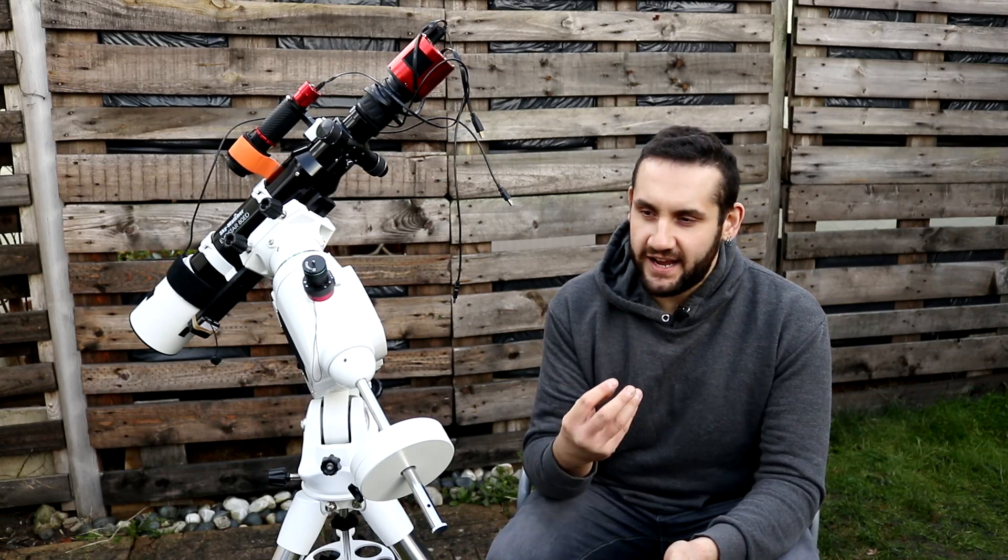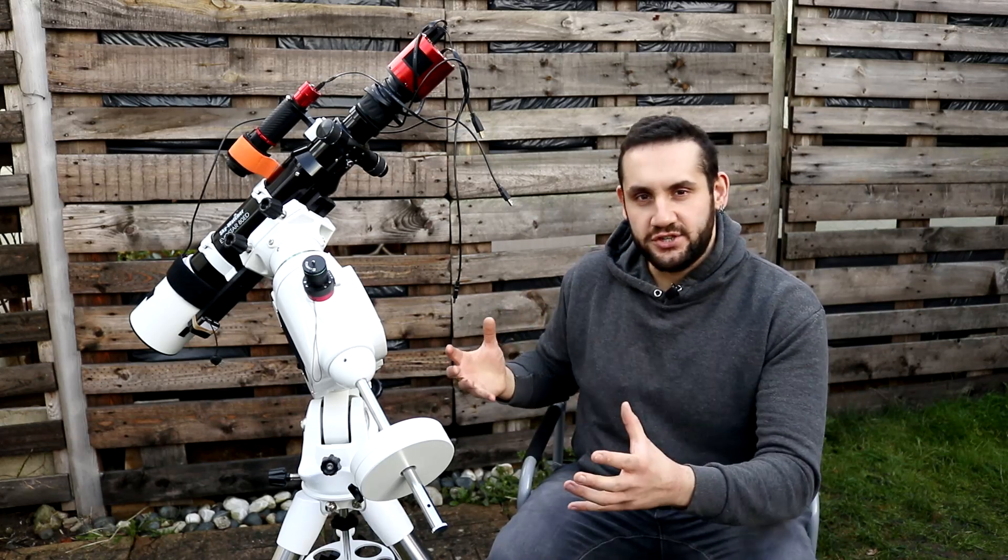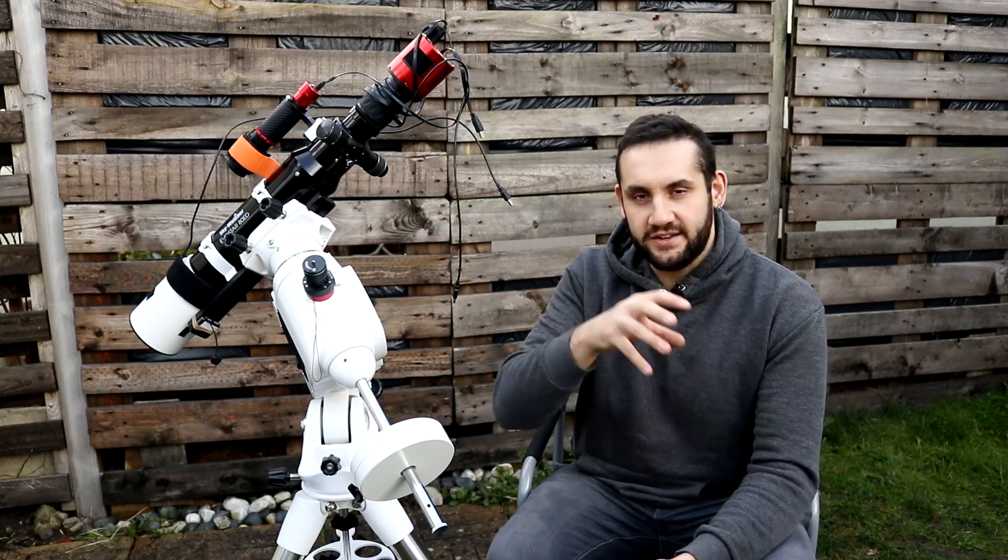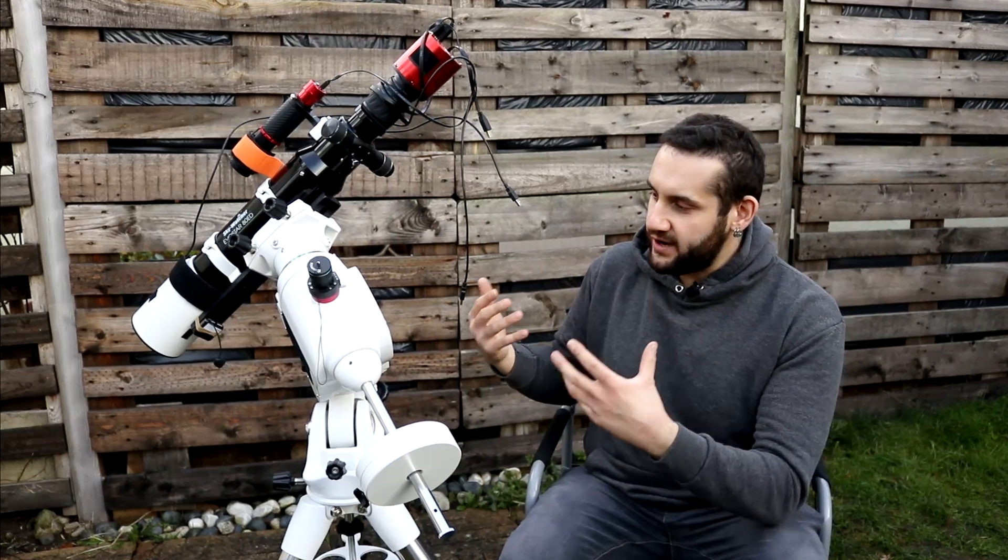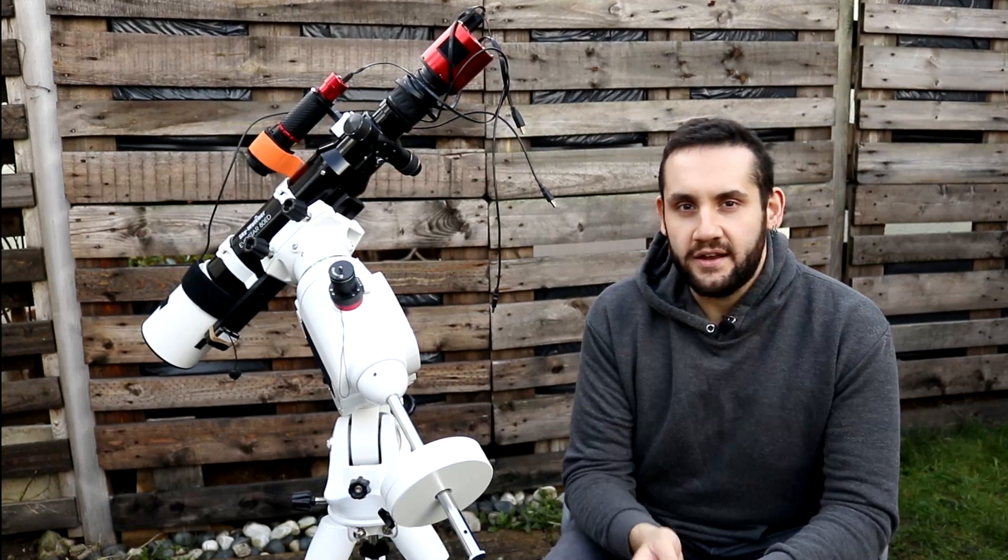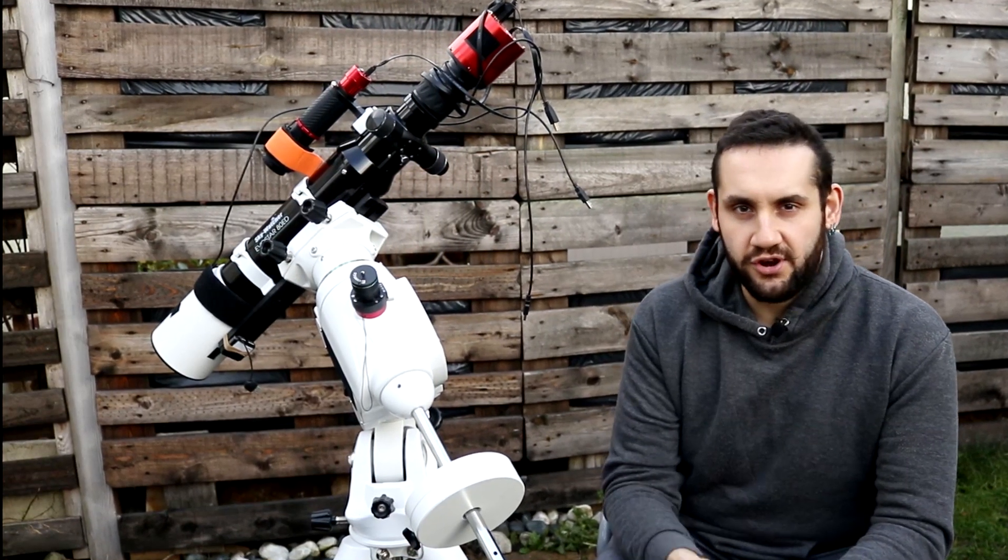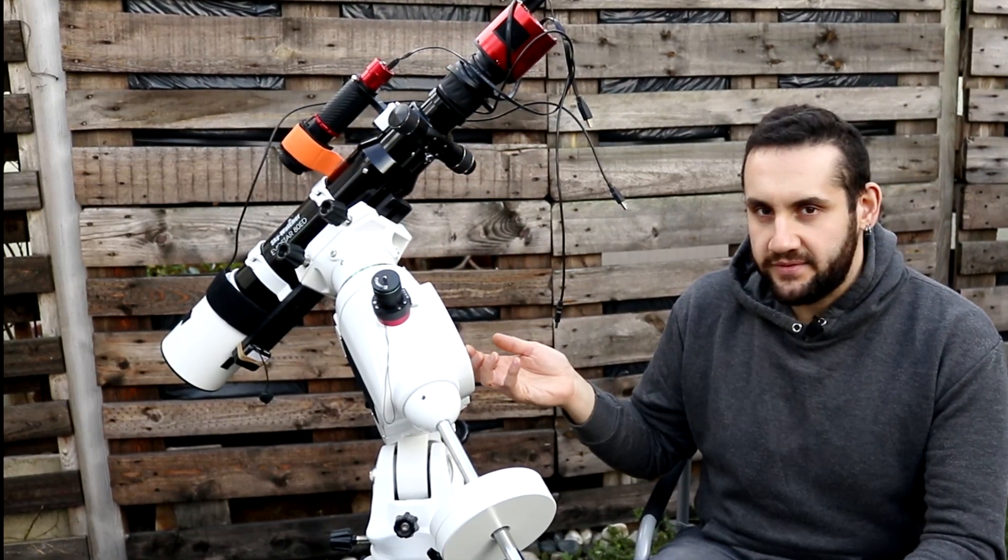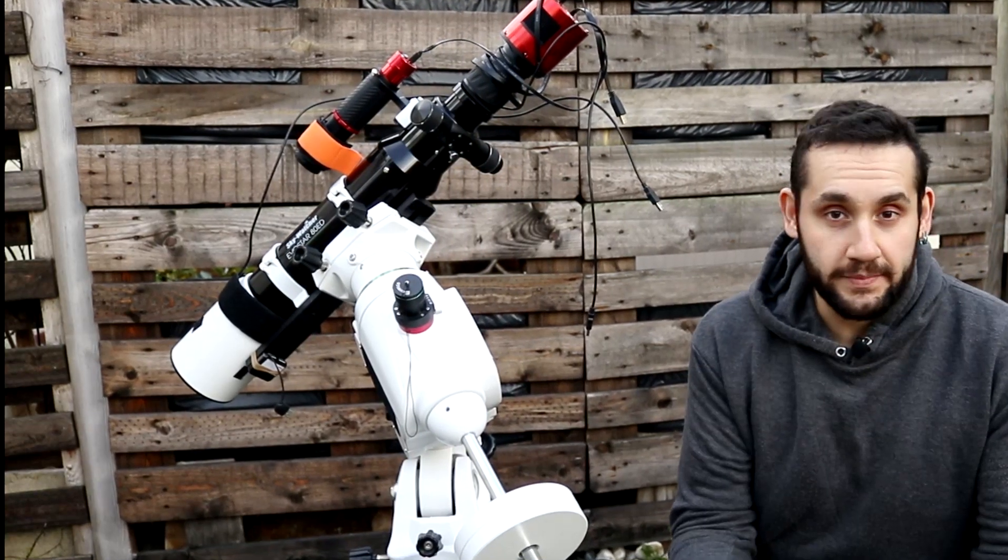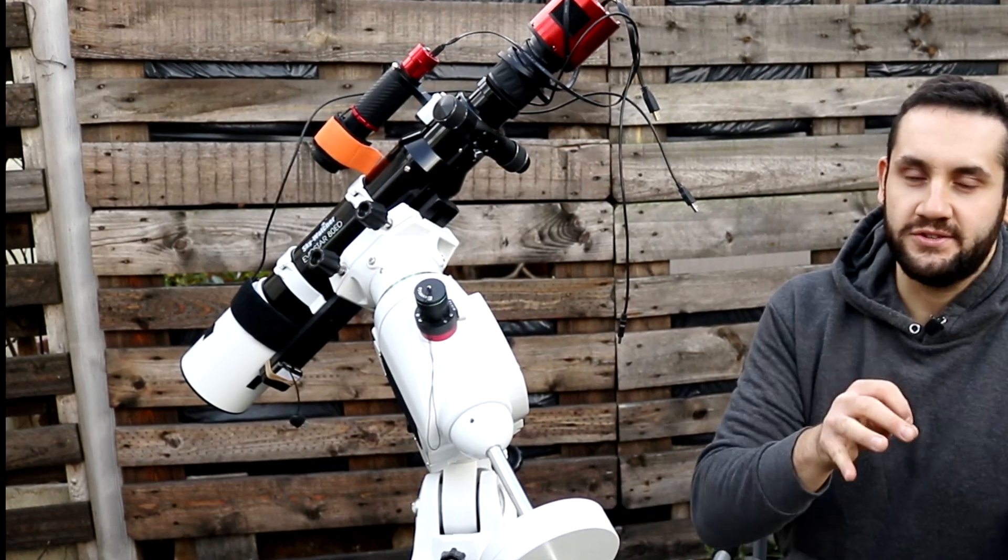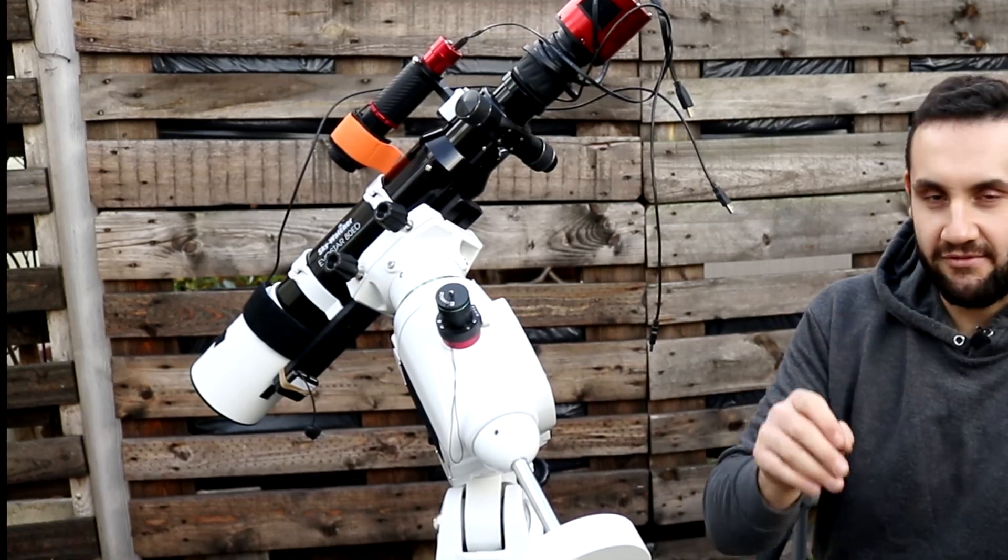Now the equatorial home position is a really important position to set your mount to because everything kind of stems off from there. If you have a good equatorial home position then your go-to function is going to be more accurate, it's going to be easier to use your finderscope to find targets, and your plate solving is going to be faster. So it's really crucial to know and to get right.